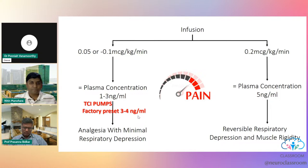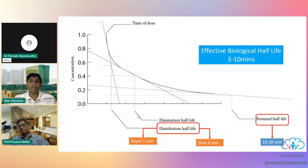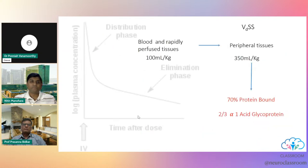Coming to pharmacokinetics — what the body does to the drug. The effective biological half-life is about 3 to 10 minutes due to a short distribution half-life and short terminal half-life, so it is metabolized very quickly. It is about 70% protein bound, predominantly bound to alpha-1 acid glycoprotein.